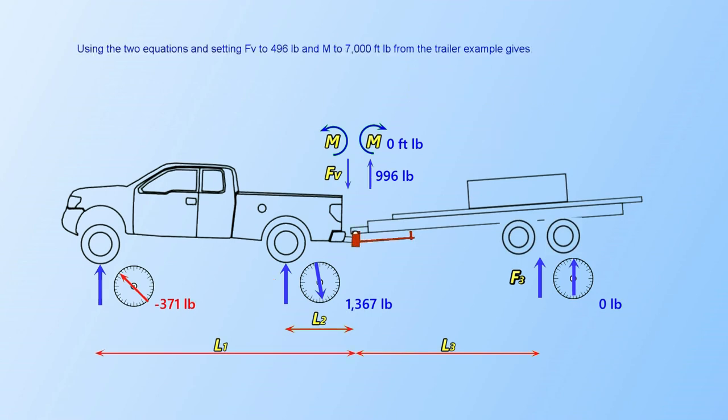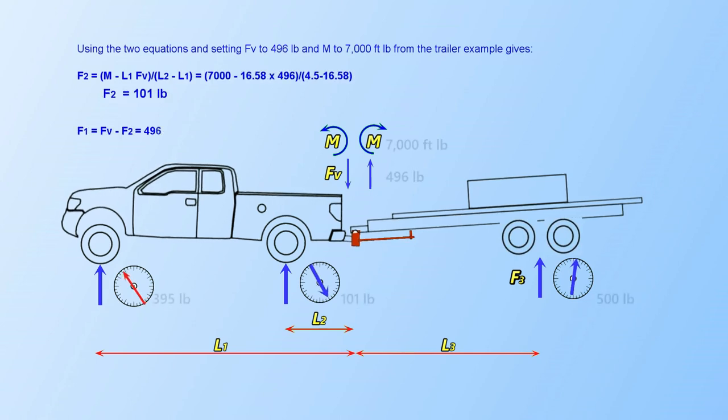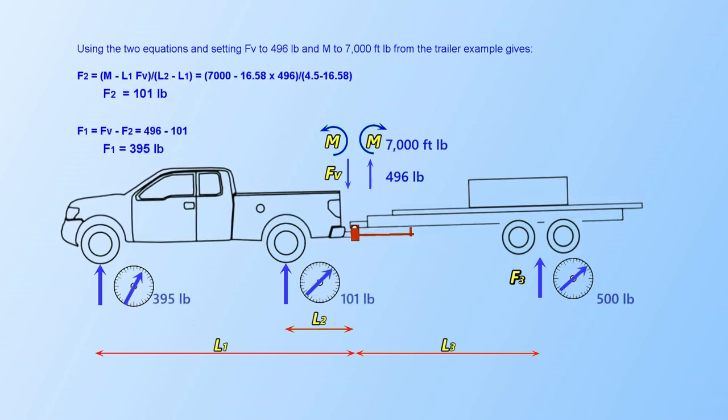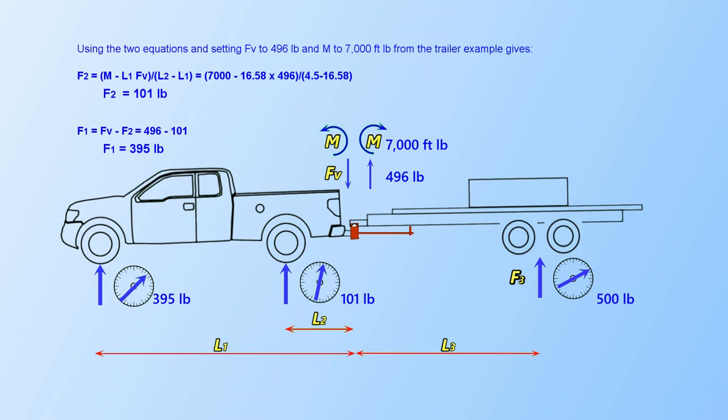Taking the example trailer loading with F sub V equals 496 pounds and M equals 7,000 foot-pounds permits calculating the new front axle load of 395 pounds, rear axle load 101 pounds, and trailer 500 pounds. Once again, this agrees perfectly with our scales.